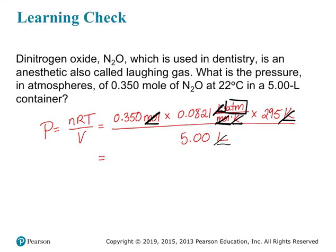Plugging into the calculator: 0.35 times 0.0821 times 295, all divided by 5. My calculator gives 1.6953, with a final unit of atmospheres.